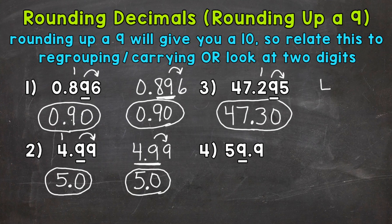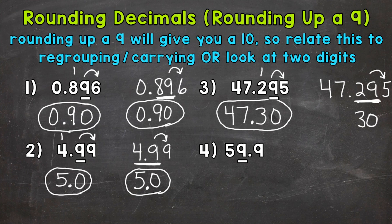Let's try the other way as well — nearest hundredth. We know we're rounding up. Look at these two digits here: 29 rounded up is going to give us 30 hundredths. Include our decimal and whole number, and we get the same thing that way as well.